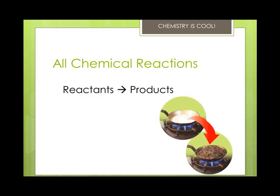All chemical reactions have two parts: the reactants, which are the substances that you start with, and the products, which are the substances you end up with. So the reactants turn into the products. In a chemical reaction, the way atoms are joined is changed. Atoms aren't created or destroyed due to the law of conservation of matter.